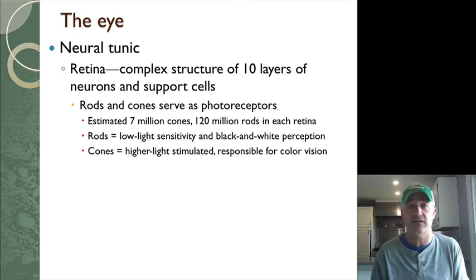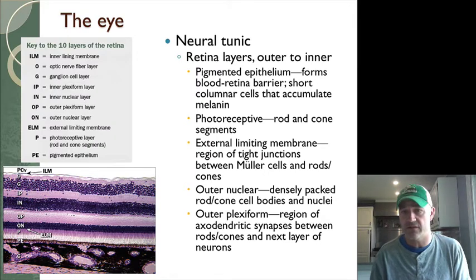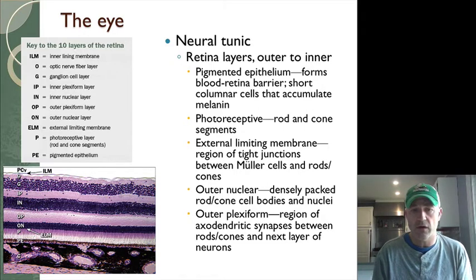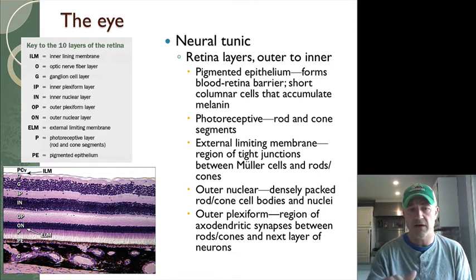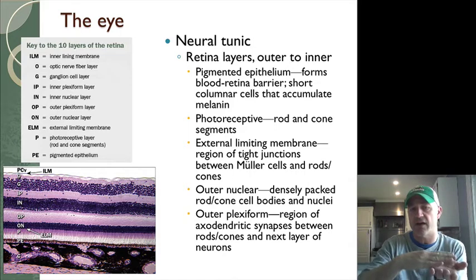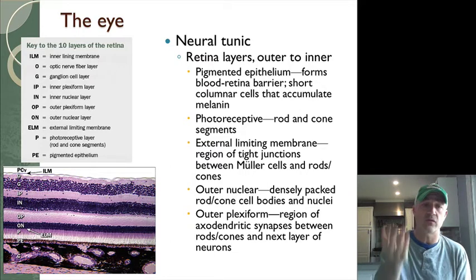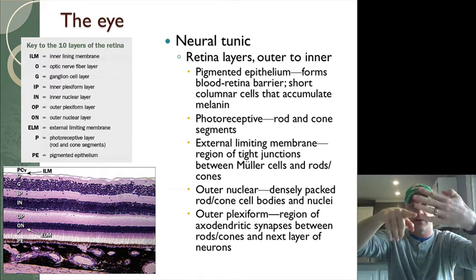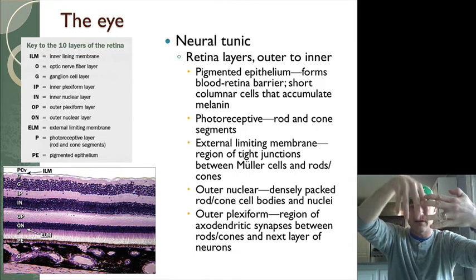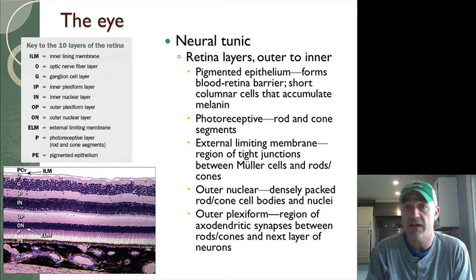Rods deal with black-and-white, grayscale vision. They have great sensitivity in low light but don't allow color or sharp vision. Looking at the retina image, the choroid coat is at the bottom, and just above it is the photoreceptor layer marked with P. Light technically has to pass through all the layers above that, then hits the photoreceptors and works its way back up before reaching the optic nerve and leaving the eyeball.